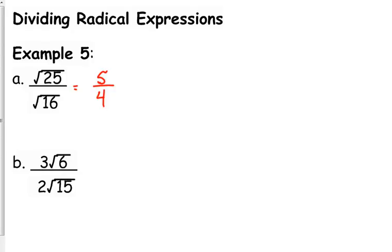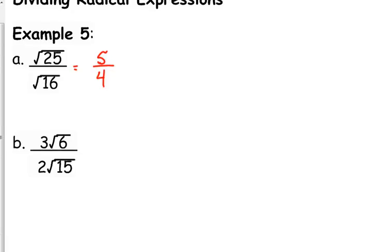Does the fraction six over fifteen reduce? They are both divisible by three. Since they are both under a square root and they're in this quotient, we can reduce them like any other fraction. Both divisible by three gives us the square root of two on the top and the square root of five on the bottom.